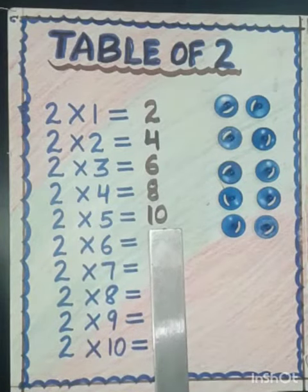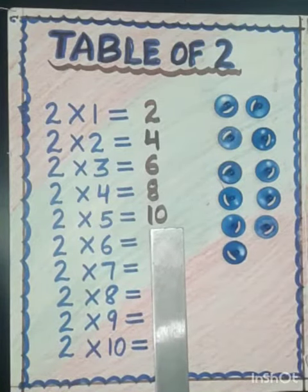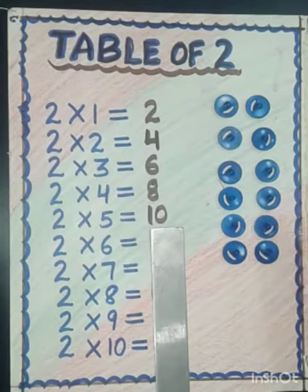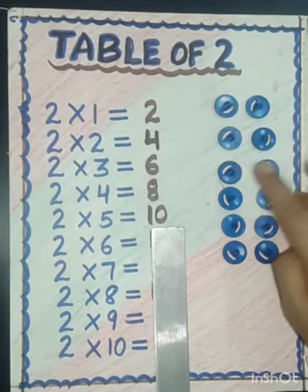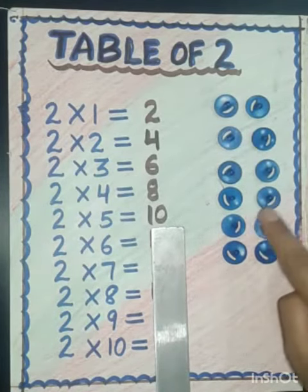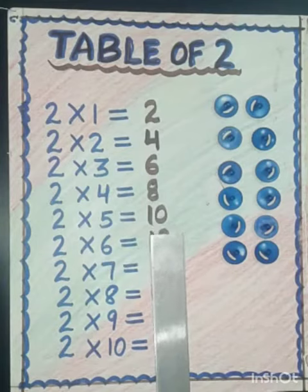Two sixes are — again we will add two more. Let's count: 1, 2, 3, 4, 5, 6, 7, 8, 9, 10, 11, 12. So two sixes are 12.